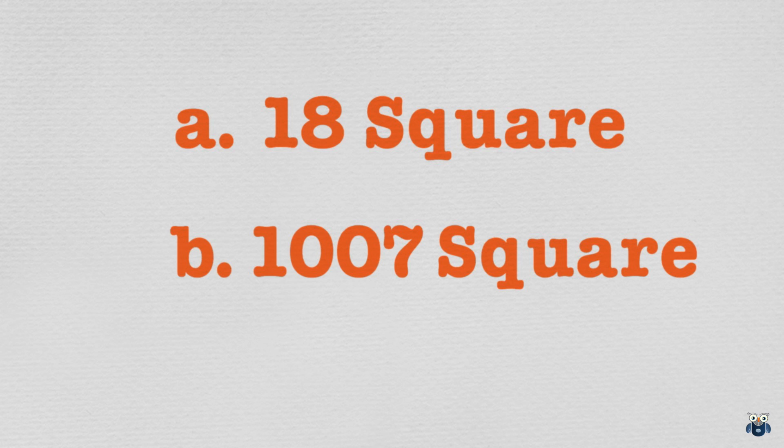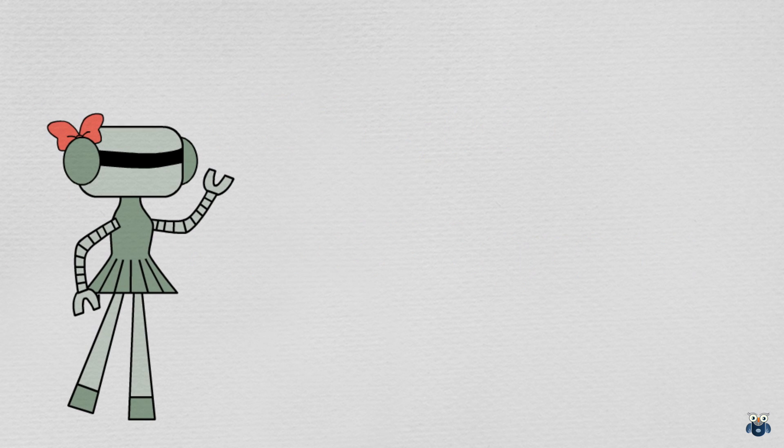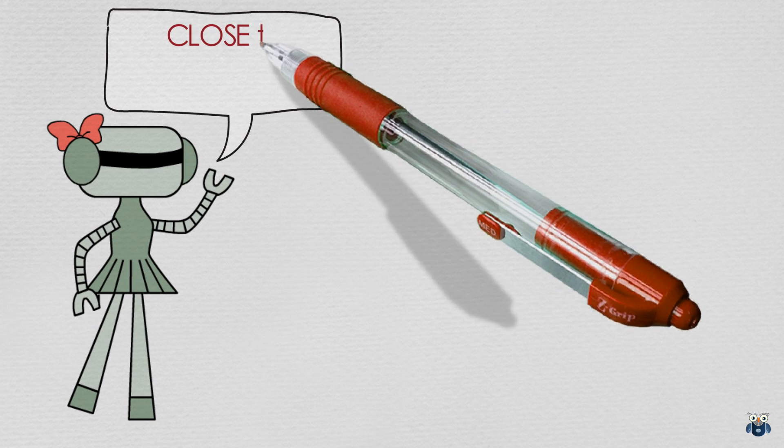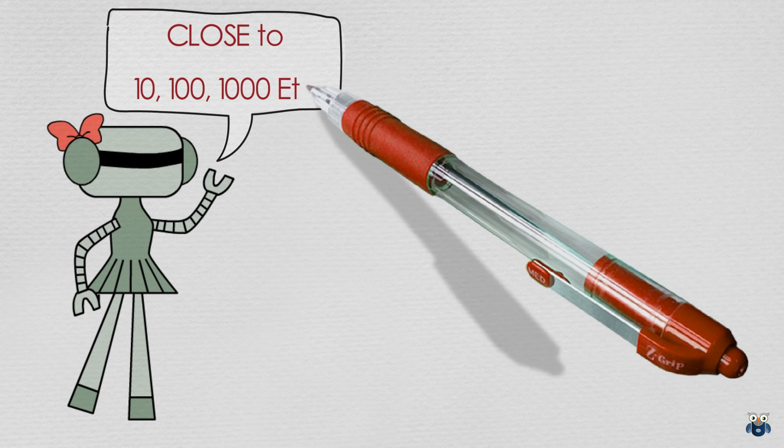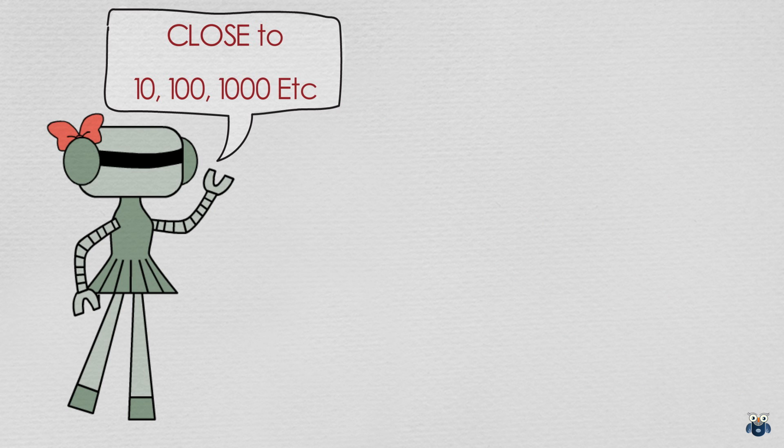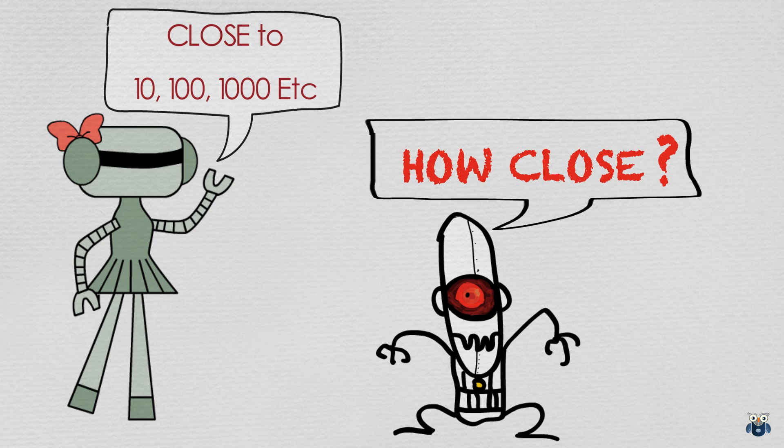If you have any questions, please ask them in the comment section. I now wish to discuss one last point before concluding. I mentioned at the beginning that this method could be used to square numbers close to 10, 100, 1000 etc. So how close is close? Let me demonstrate.